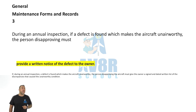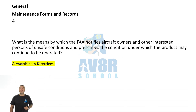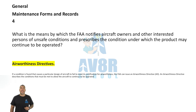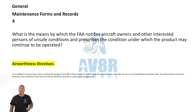Number four: Airworthiness directives. What is the means by which the FAA notifies aircraft owners and other interested persons of an unsafe condition and prescribes the conditions under which the product may continue to operate? It is airworthiness directives.